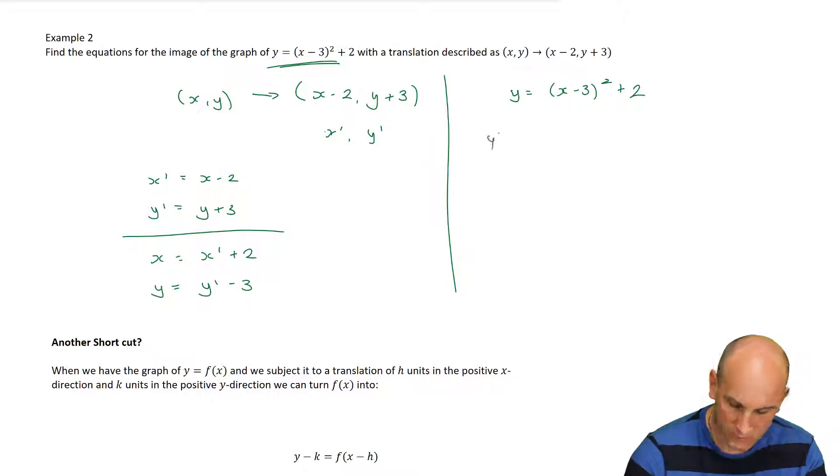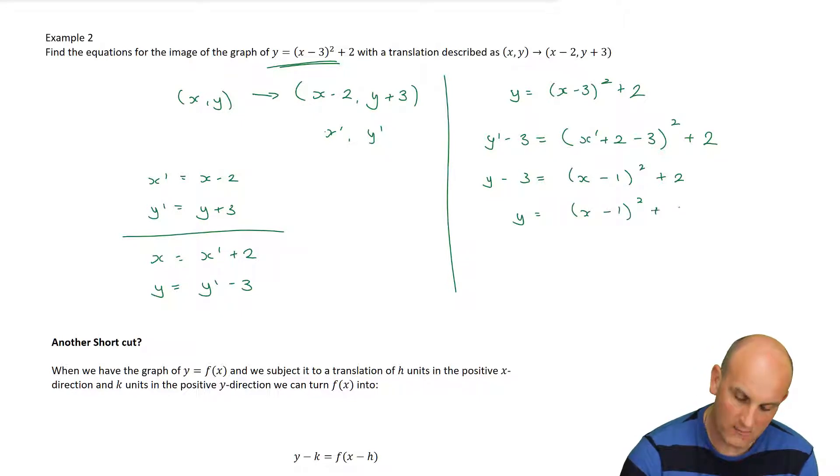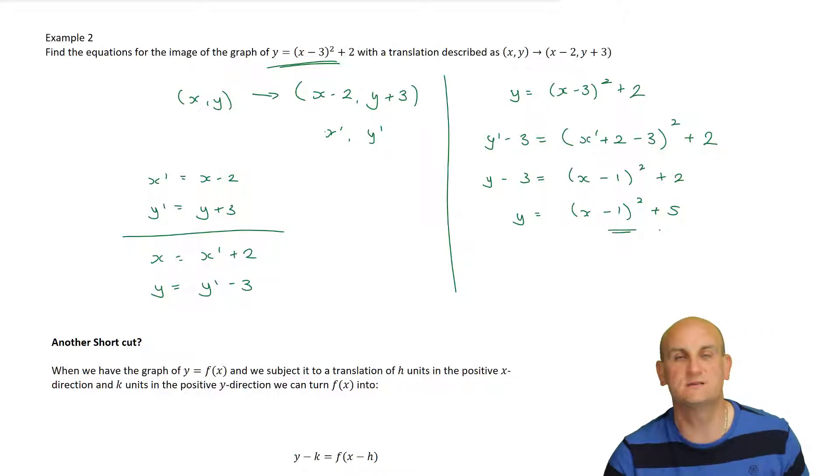So, substituting these in now, I have y dashed minus 3 is equal to brackets. Now, x has got to be replaced with x dashed plus 2. There's my minus 3 still. And, then I'm going to add 2 on there, or I will do if my little tablet would work. I don't need those dashes anymore. So, I've got y minus 3 is equal to x. Well, I may as well just solve that little bit there to make life easier for me. Plus 2, and then I'm going to add 3 to both sides to give me x minus 1 squared and plus 5. There we go. A slightly more complicated example, but the same process.